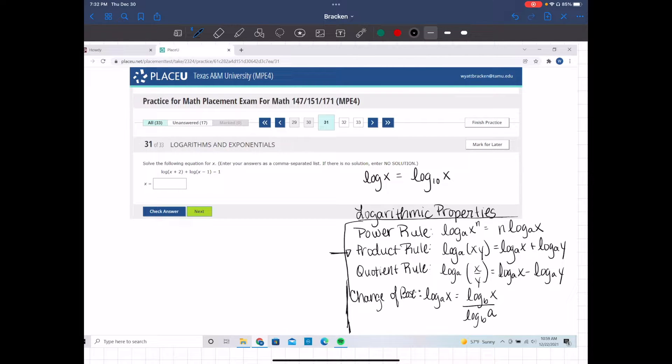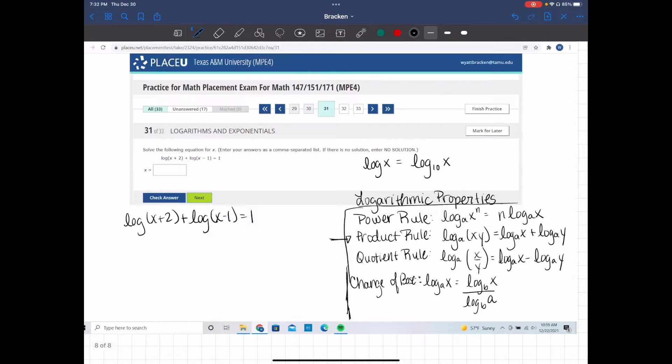So I can start off. I know this is going to turn into, since I have log of x plus 2 plus log of x minus 1 equals 1, then I'm going to use my product rule, and this is going to become log of x plus 2 times x minus 1 equals 1.